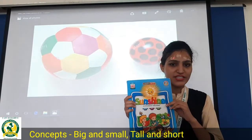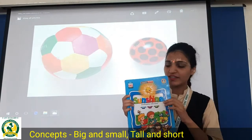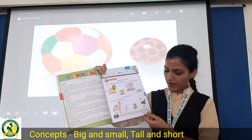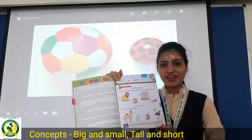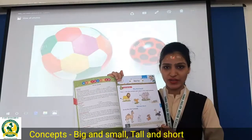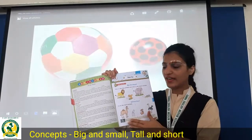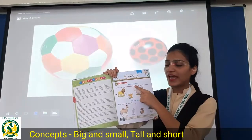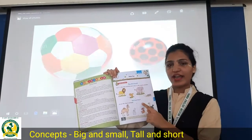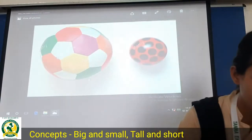So first of all, take out your sunshine book. And then take out page number 107. Here we will do two concepts: big and small, tall and short. Okay students, let's do it.